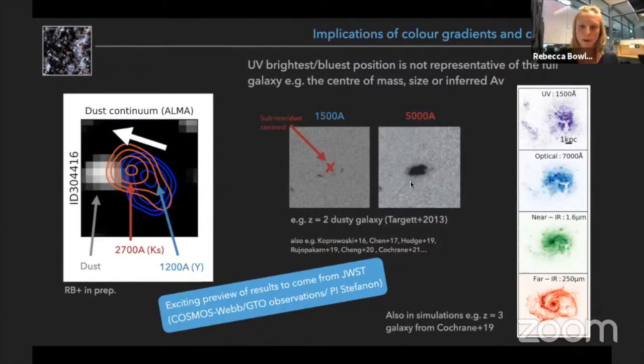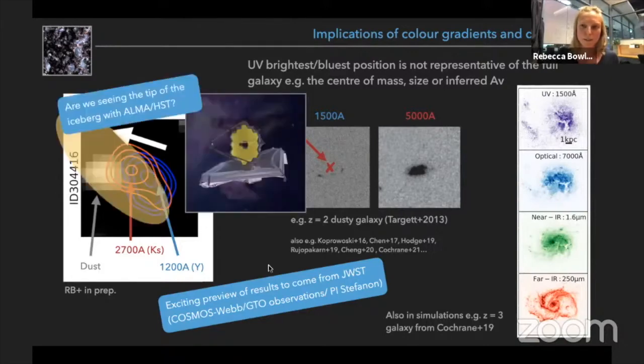Where we're going to be able to really measure this kind of longer wavelength part of the spectrum at high resolution for the first time. And as my very final point, I'm going to just pose the question: are we seeing just the tip of the iceberg with ALMA and Hubble?